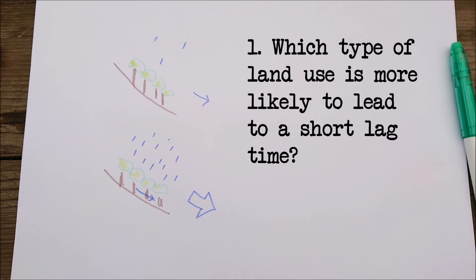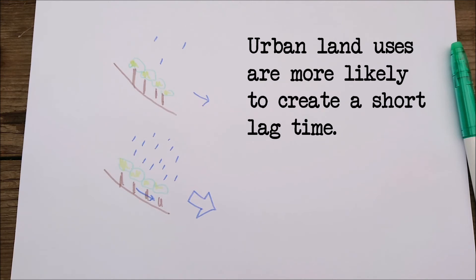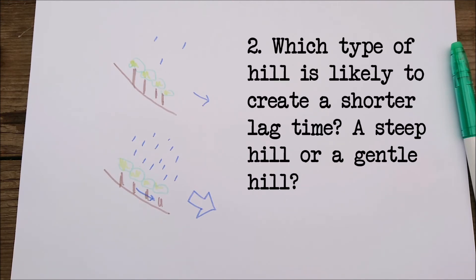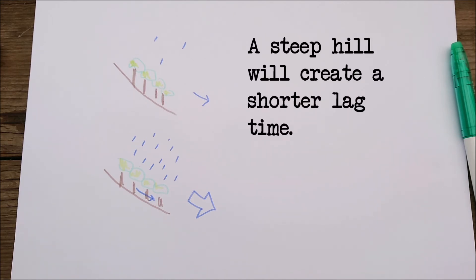Question one: Which type of land use is more likely to produce a short lag time? Urban land uses are more likely to create a short lag time because the surfaces are largely impermeable and therefore water runs off really quickly. Question two: Which type of hill is likely to create a shorter lag time - a steep hill or a gentle hill? A steep hill will create a shorter lag time because the water flows down it much more quickly, it's less likely to soak into the ground, and therefore will enter the river more quickly.